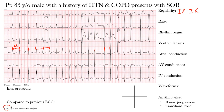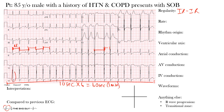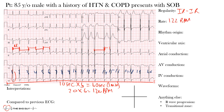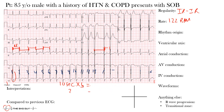Because we have an irregular rhythm, we estimate the rate by counting the ventricular complexes across the EKG and multiplying by six, since the standard 12-lead ECG represents 10 seconds, and 10 times 6 equals 60 seconds. Counting across, we get 20 complexes; 20 times 6 gives a rate of about 120 beats per minute. The machine gave us 122 bpm, which is close enough.